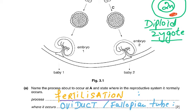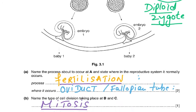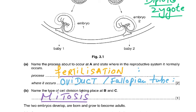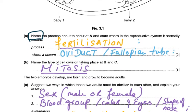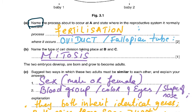Name the process: that is fertilization. You couldn't use any other word — the question says 'name the process,' just like if I ask your name you give your name, not your address. Where does it occur? In the oviduct, or fallopian tube. Name the type of cell division at B and C: that's mitosis, the normal cell division responsible for growth, asexual reproduction, and repair of tissues — never say 'repair of cells.'